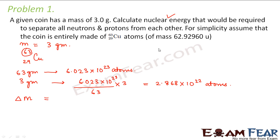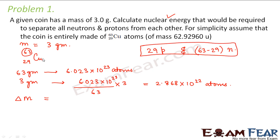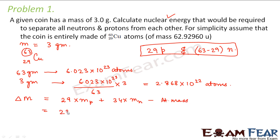Mass defect is the sum of the masses of the constituents minus the atomic mass of the nucleus. Copper is made up of 29 protons and (63 − 29) = 34 neutrons. So delta-m equals 29 × (mass of proton) + 34 × (mass of neutron) − (atomic mass of copper). That is: 29 × 1.00725 + 34 × 1.008665 − 62.9296.